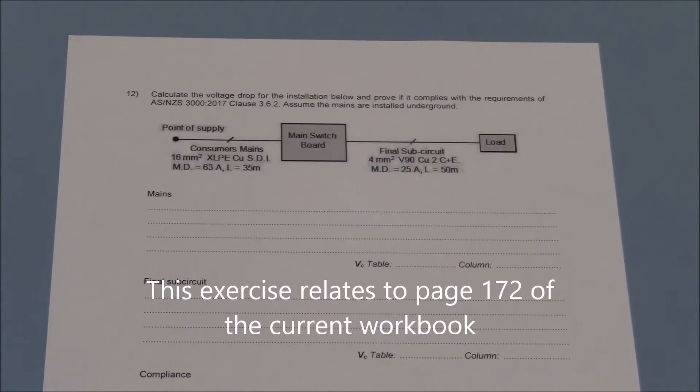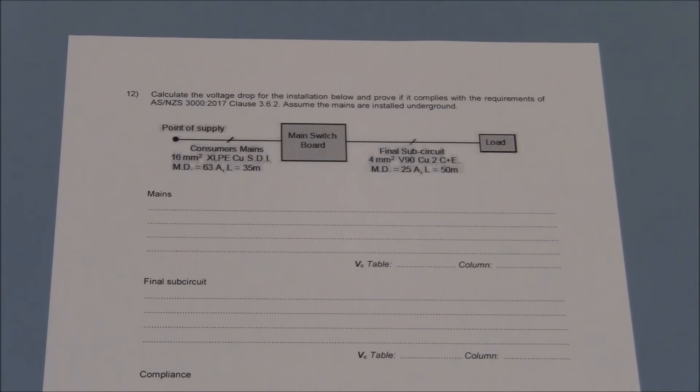There are a number of ways to determine voltage drop. Table C8 in AS3000 is an example of the simplified method. Section 4 of AS3008 lists a number of other methods.